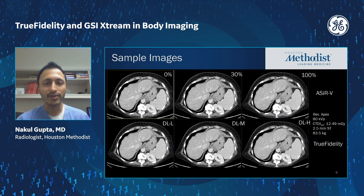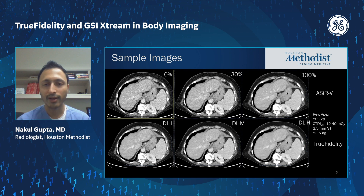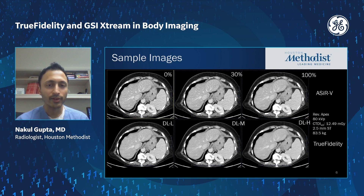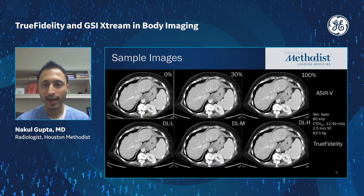Here are some sample images: the top row reconstructed with ACER-V at 0%, 30%, and 100%, and the bottom row being True Fidelity at low, medium, and high strength. You can see across the board that the deep learning reconstruction images from True Fidelity have a much more natural noise texture than the higher-strength ACER-V images, and tend to have lower noise levels overall.